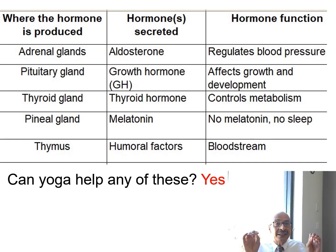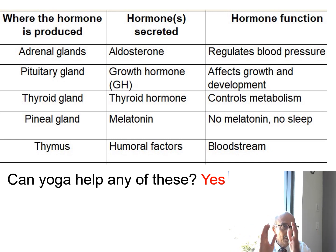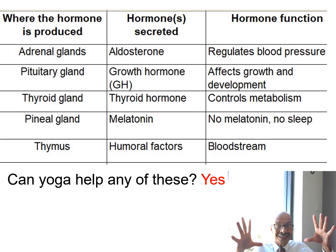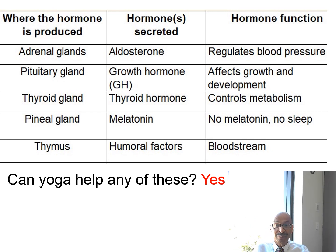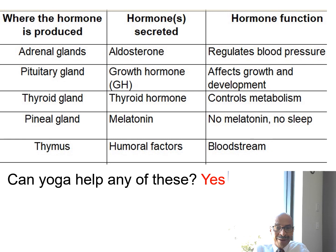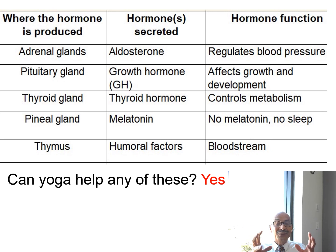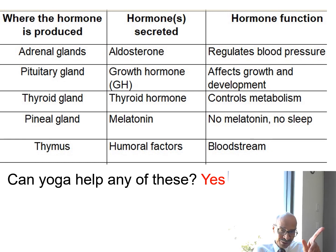One example of thyroid dysfunction: when you see people whose eyes become bulgier over time, that is a clear sign their thyroid is overactive — this is called Graves' disease. If you take pictures of the same person over three to five years and see their eyes growing proportionally bigger, you know they are suffering from Graves' disease. We now have experiments, especially from the last decade, showing that yoga can help optimize the flow of many of these hormones — I will discuss each one specifically in another talk.